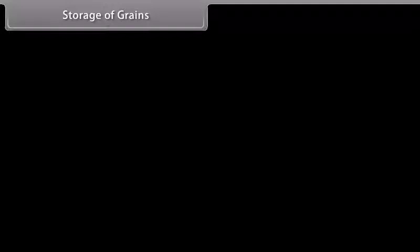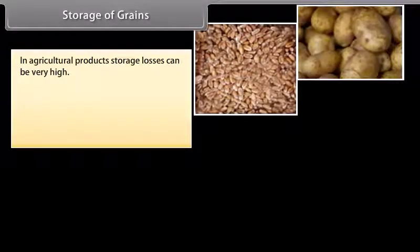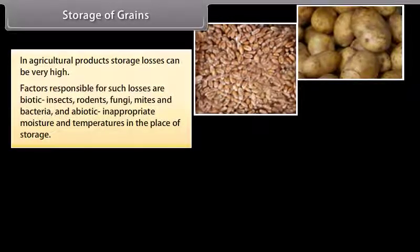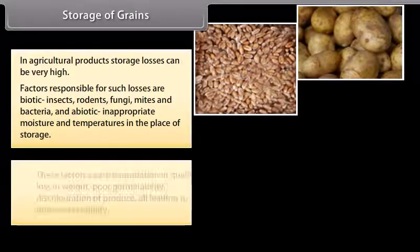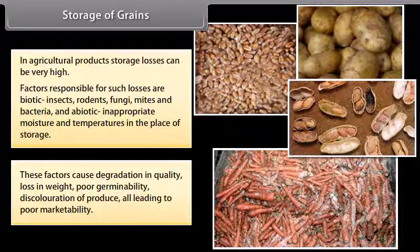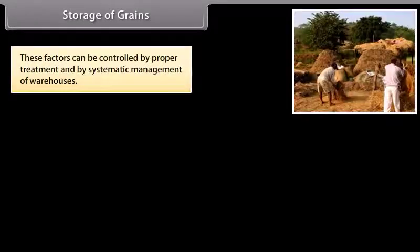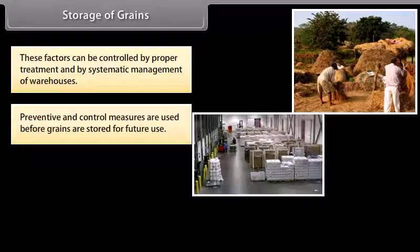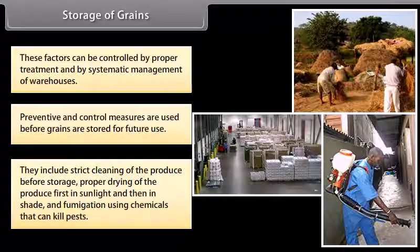In agricultural products, storage losses can be very high. Factors responsible for such losses are biotic — insects, rodents, fungi, mites and bacteria — and abiotic — inappropriate moisture and temperatures in the place of storage. These factors cause degradation in quality, loss in weight, poor germinability and discoloration of produce, all leading to poor marketability. These factors can be controlled by proper treatment and systematic management of warehouses. Preventive and control measures include strict cleaning of the produce before storage, proper drying first in sunlight then in shade, and fumigation using chemicals that can kill pests.